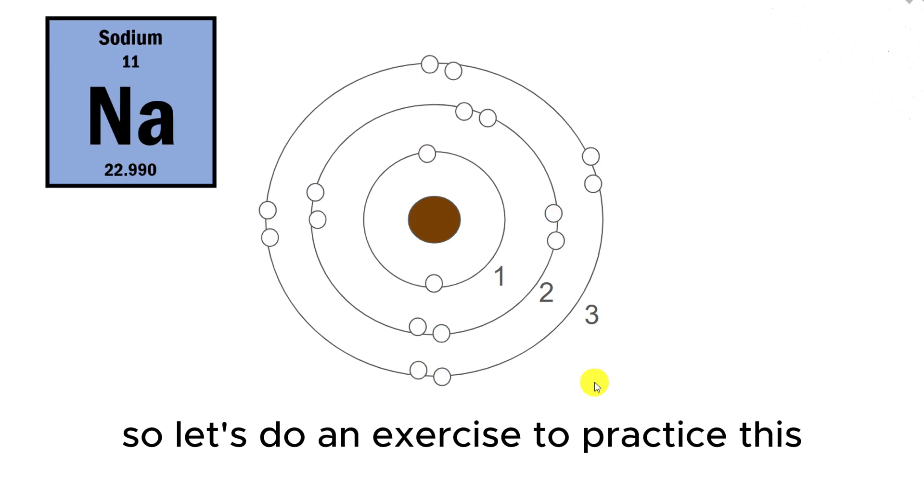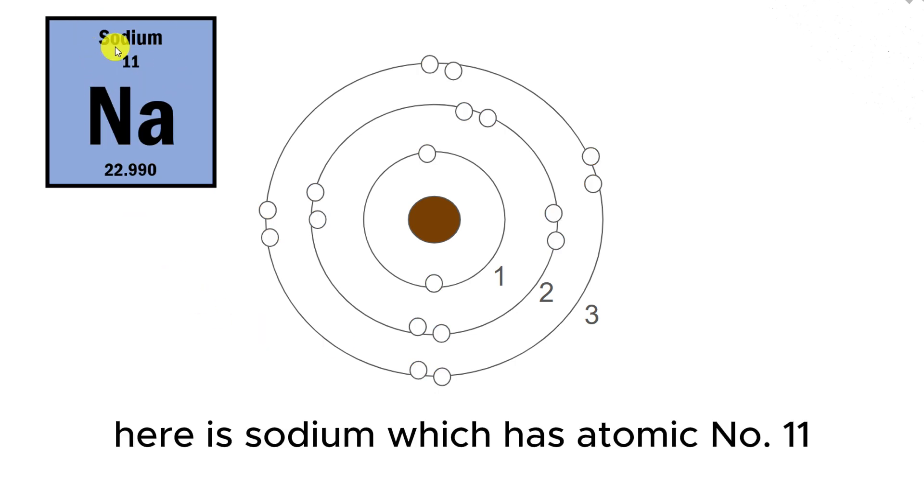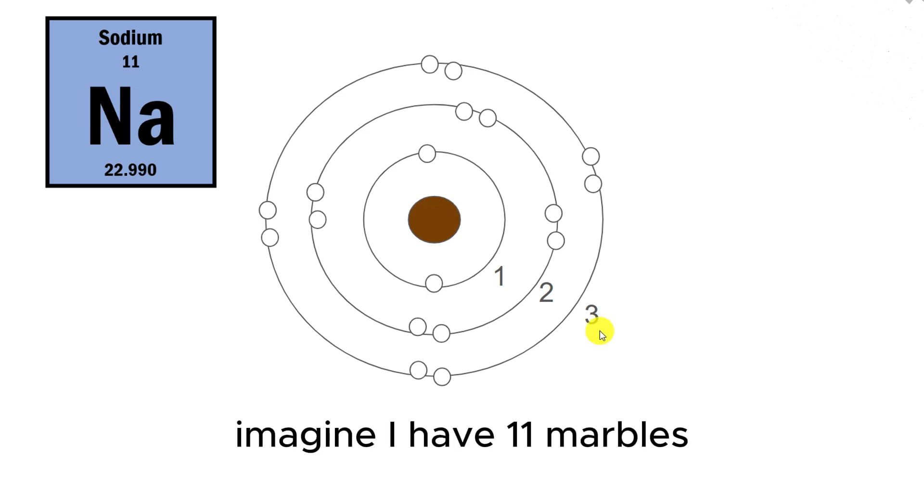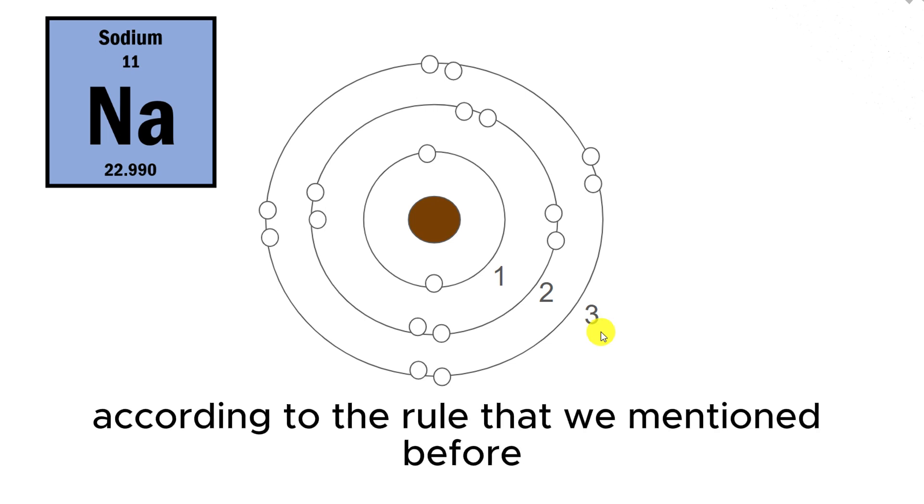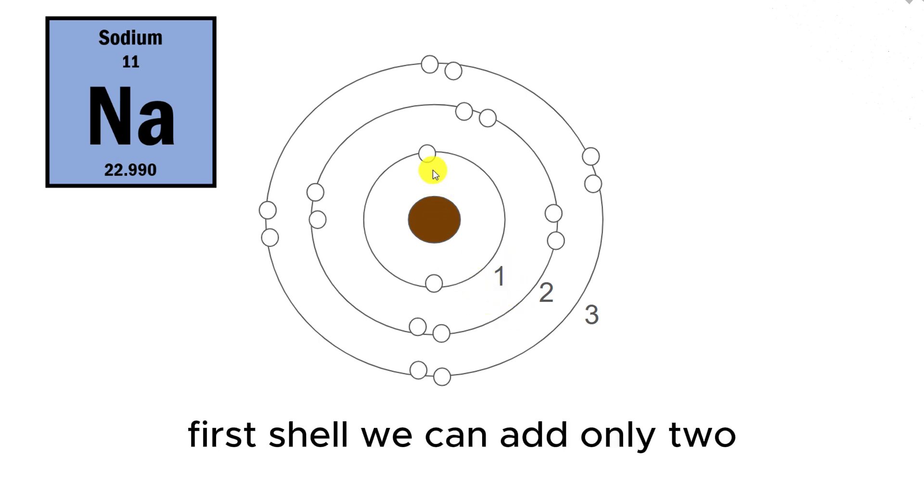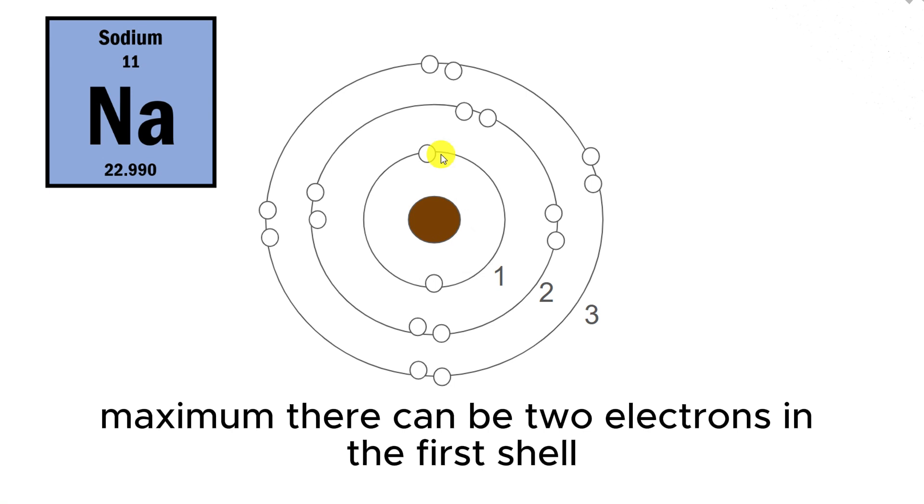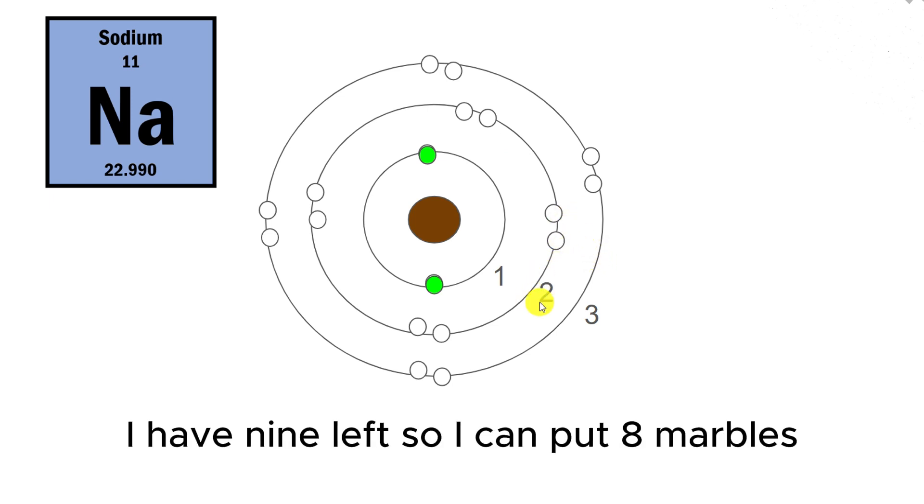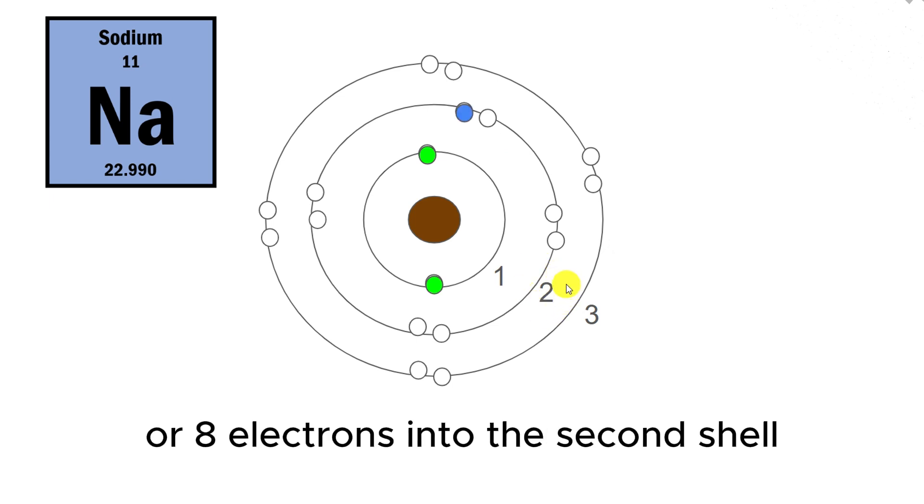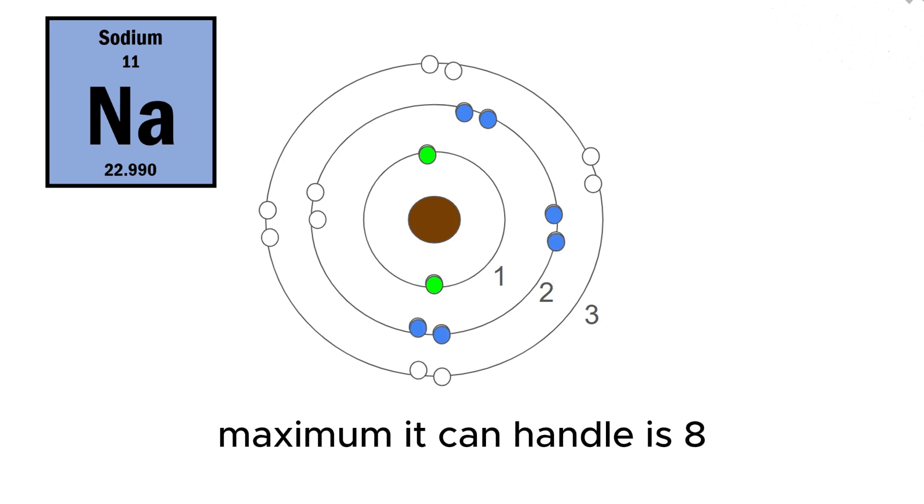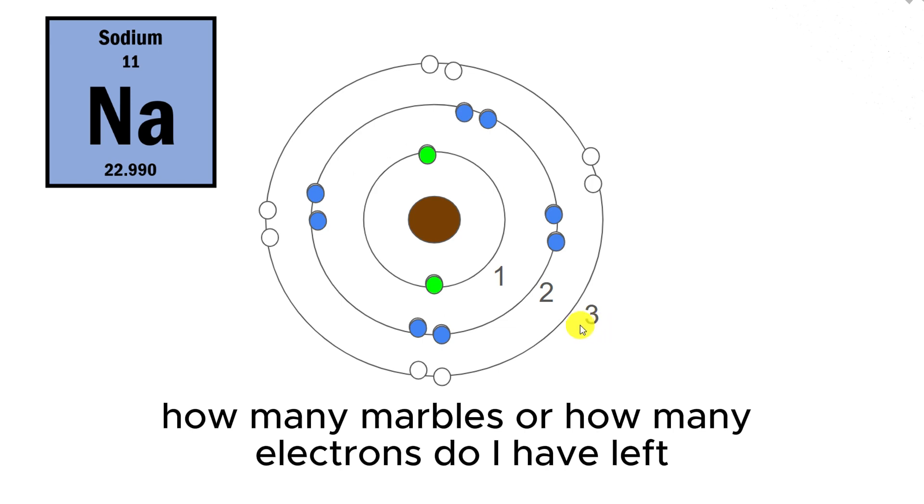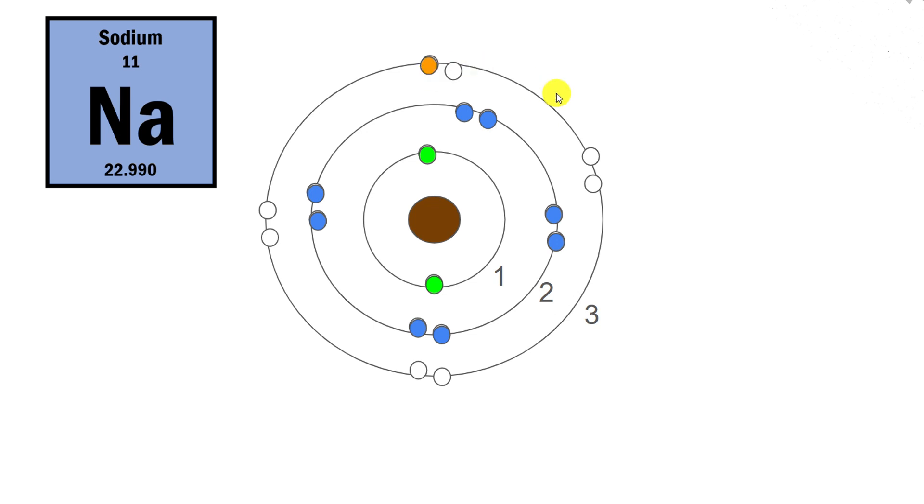Let's do an exercise to practice this. Here is sodium, which has atomic number 11, which means sodium must have 11 protons and 11 electrons. Now I need to arrange these 11 electrons according to our rule. Imagine I have 11 marbles and I need to put them into the shells. First shell, we can add only two. I will put two marbles or two electrons into the first shell. I have nine left. I can put eight marbles or eight electrons into the second shell. How many marbles do I have left? Just one. So that has to go to the third shell. Very easy.